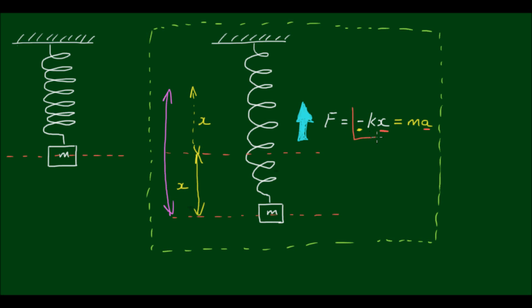Right now, let's concentrate on this equation. This negative kx is equal to ma, which is called the equation of motion for this system.